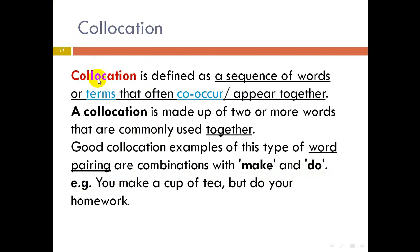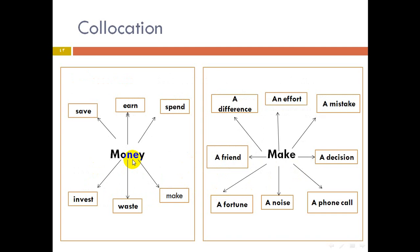Collocation is defined as a sequence of words or terms that often co-occur or appear together. A collocation is made up of two or more words that are commonly used together. Good examples are combinations with make and do: you make a cup of tea, but you do your homework. Other examples with money: save money, earn money, spend money, invest money, waste money, make money. With make: make a difference, make a friend, make a fortune, make a noise, make a phone call, make a decision, make a mistake.